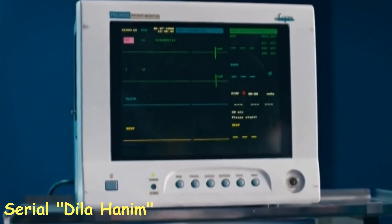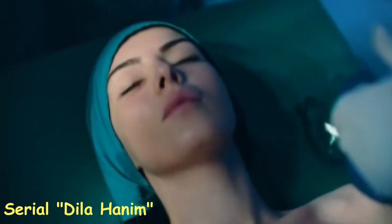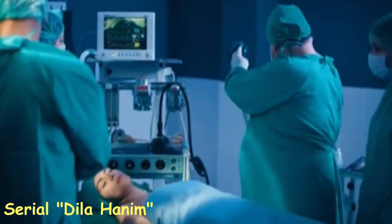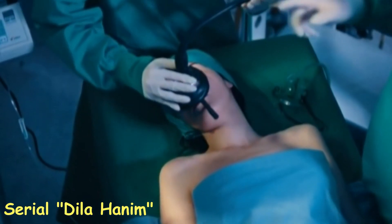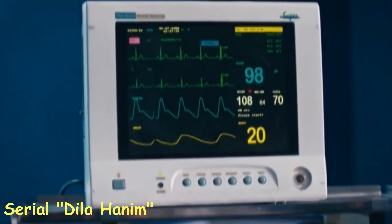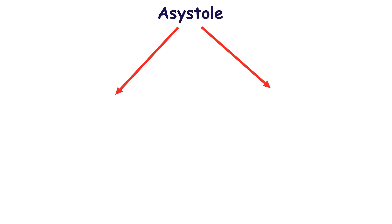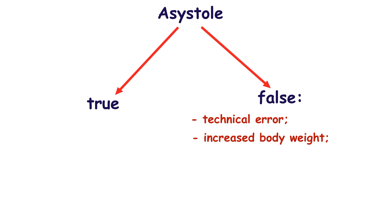Despite the fact that current guidelines do not recommend defibrillation in patients with a flat line ECG, it may be helpful in some patients. Not all asystoles are true asystoles. For example, false asystole can appear on an ECG monitor due to a technical error. Also, increased body weight may hide fine waves occurring in the case of ventricular fibrillation, and fibrillation waves may simply be too small to detect on ECG. This leads to misdiagnosis of asystole and incorrect management.